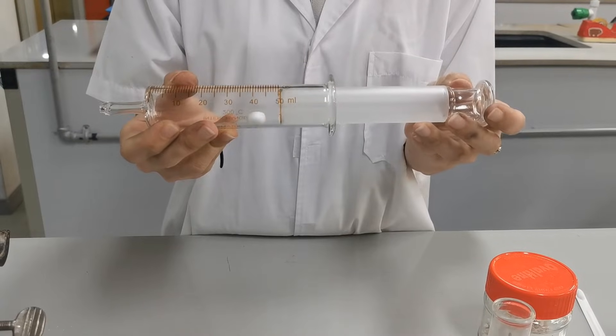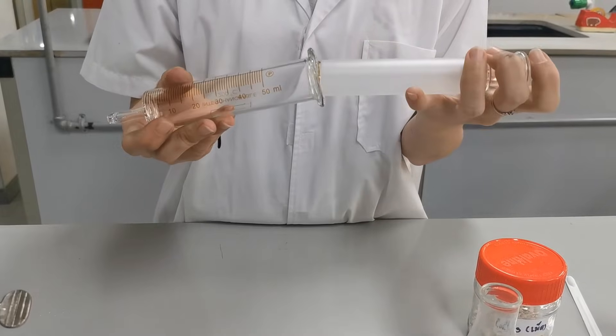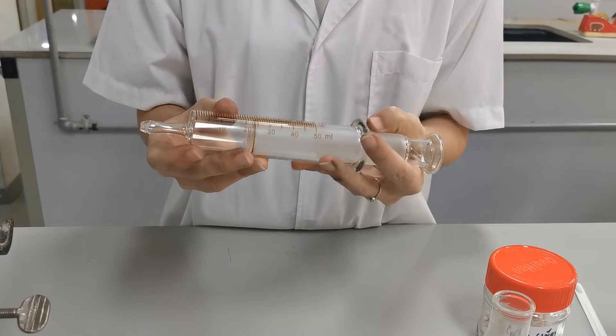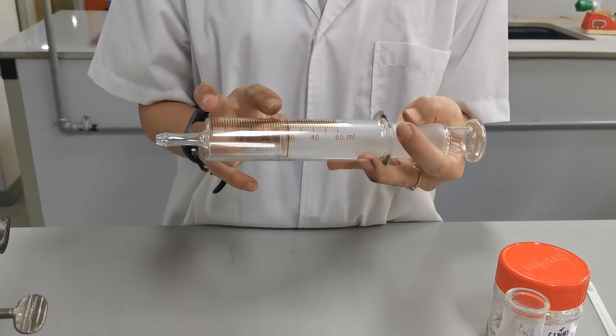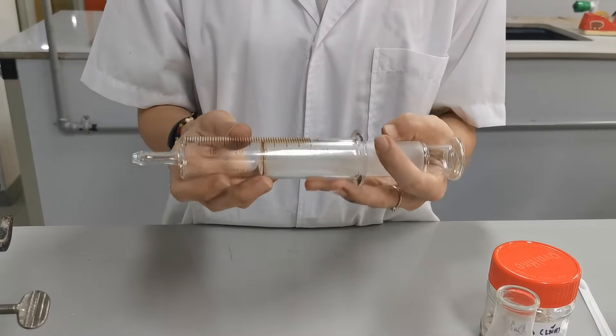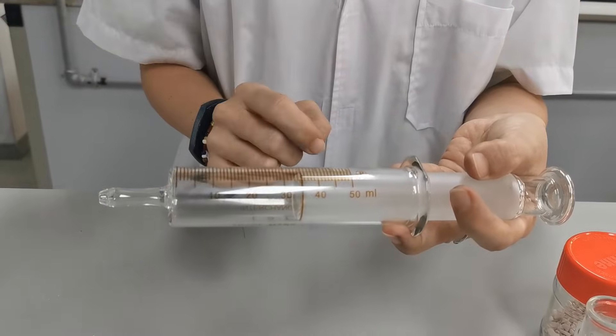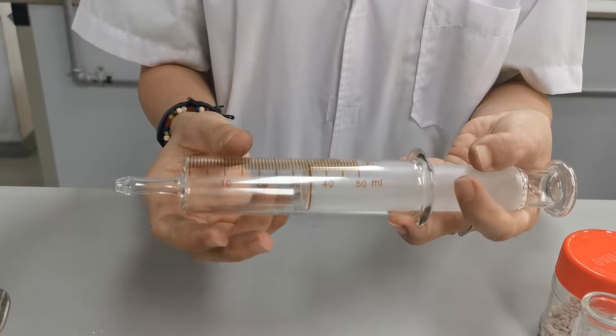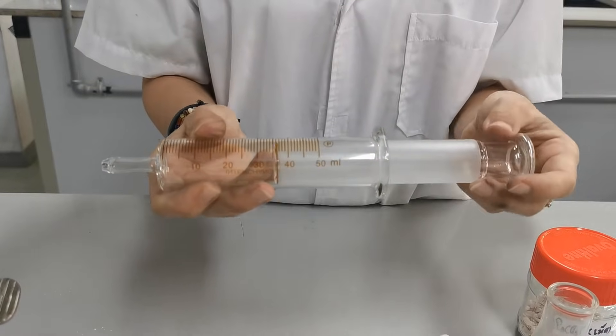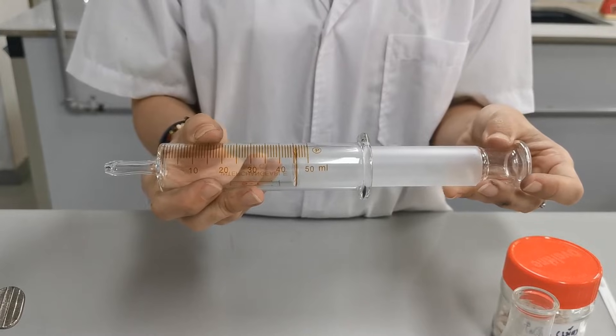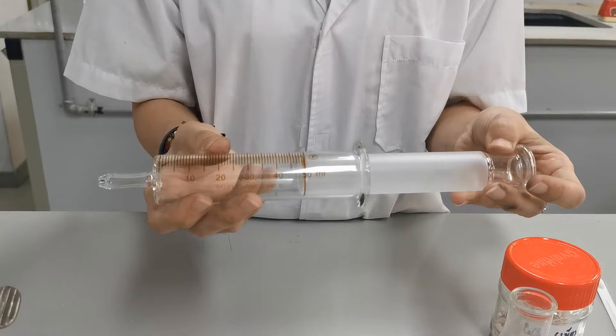One thing you need to be careful of when using a gas syringe is to pay attention to the final volume of gas produced. In this case, we are using a 50ml capacity gas syringe. Other gas syringes might be smaller, so the reaction you're going to do must not produce gas exceeding 50ml.